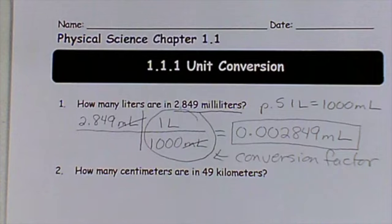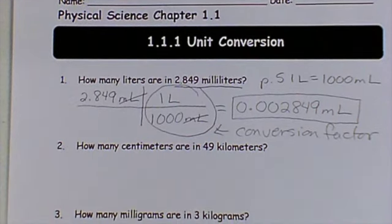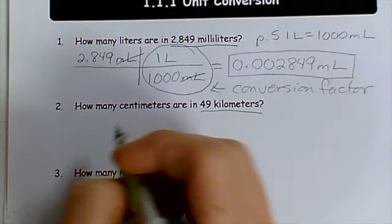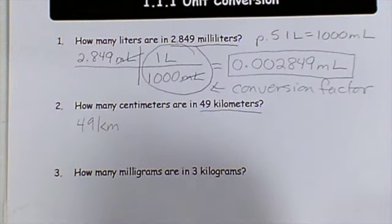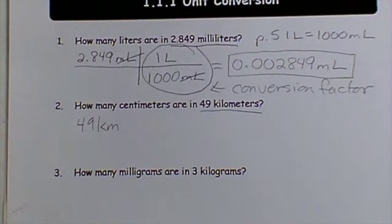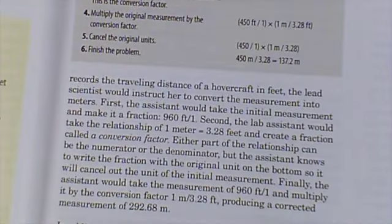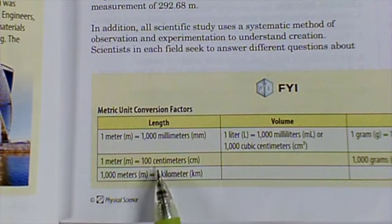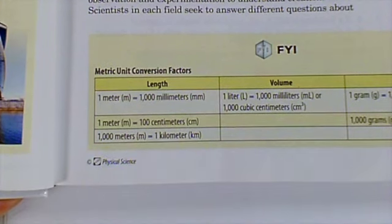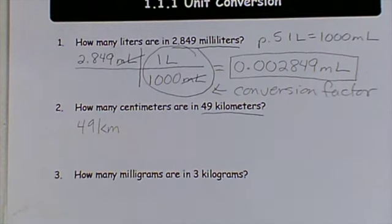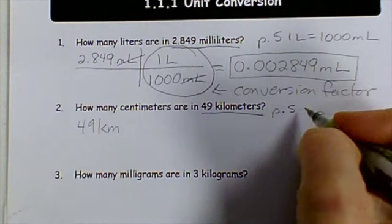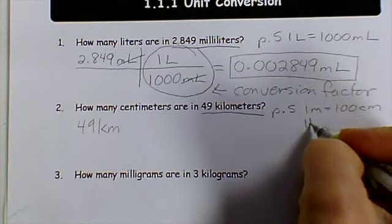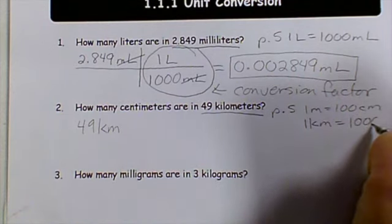So let's try another problem. Number two says, how many centimeters are in 49 kilometers? So I write down what I'm given: 49 kilometers. And I go to my book. And I see that there's no conversion directly from centimeters to kilometers. I have centimeters to meters. So that's what I'm going to go with. So for this one on page five, I learn that one meter is 100 centimeters, and one kilometer is 1000 meters. So I'm going to use both of these conversion factors.